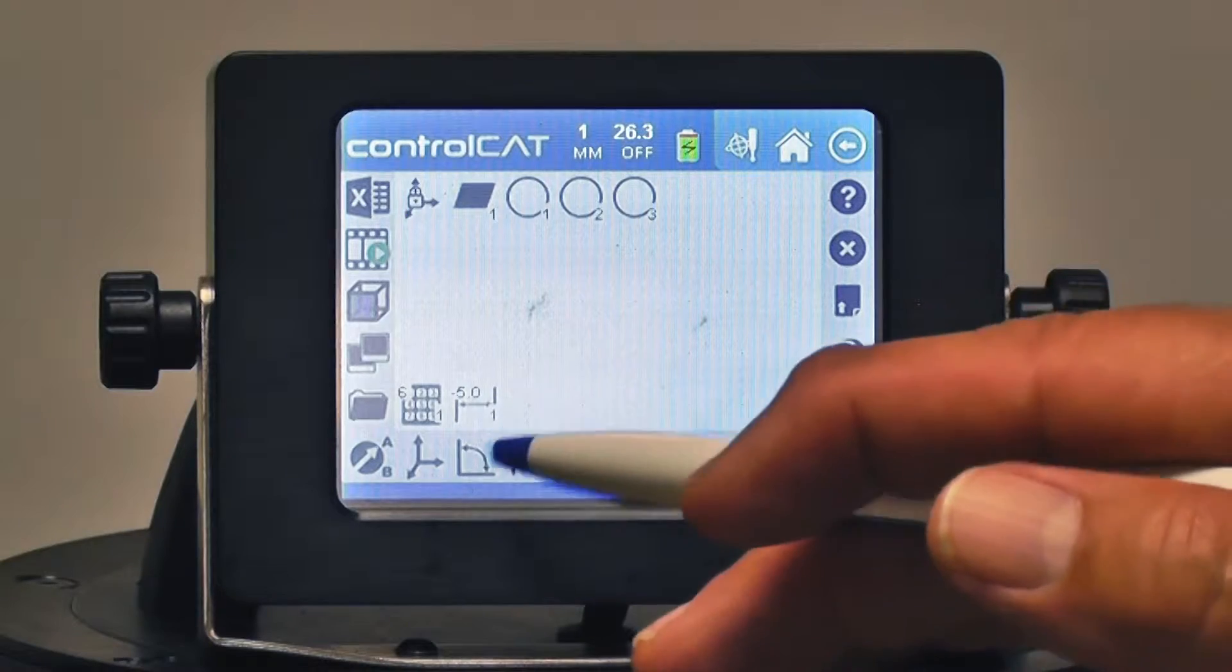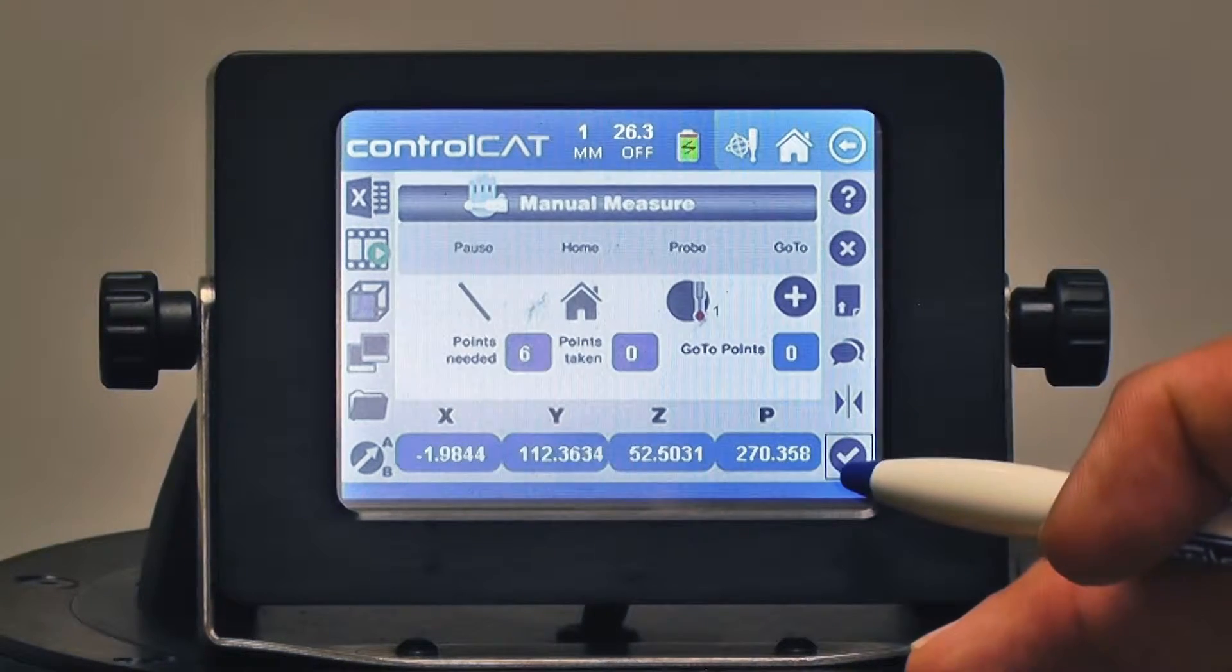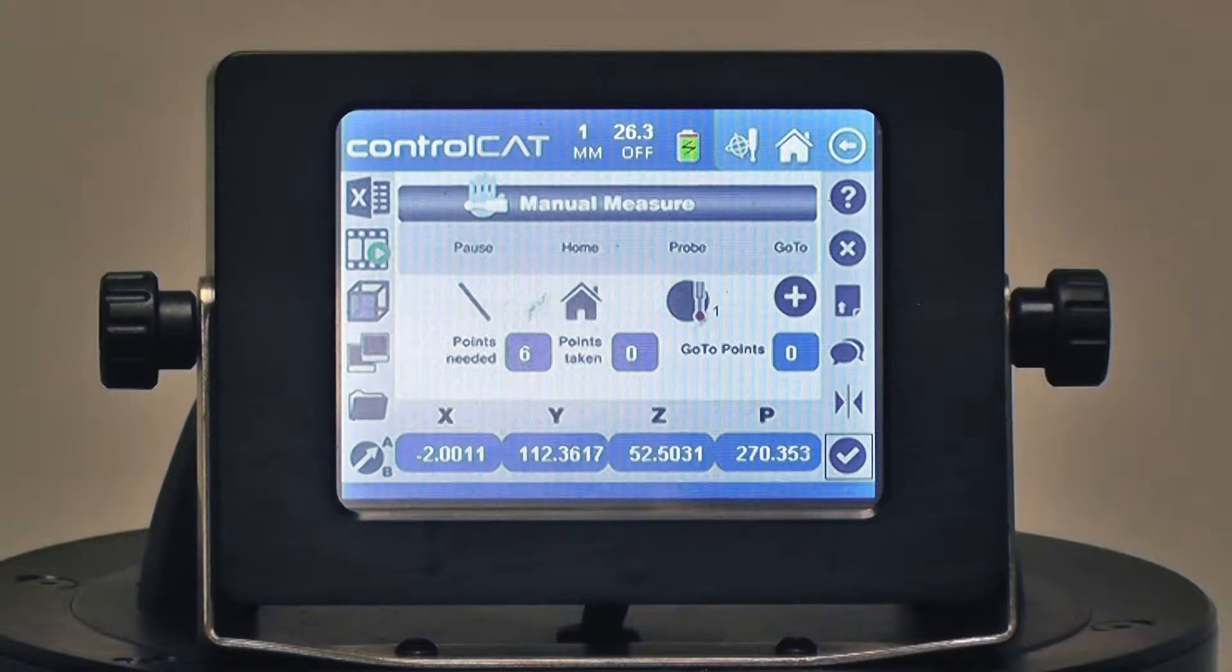So in this case, since we're going to do an angle, I'll highlight the angle icon and I'll hit the Enter button, and it's telling me I need to take six points.